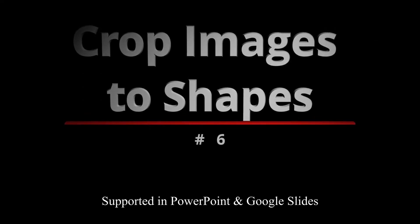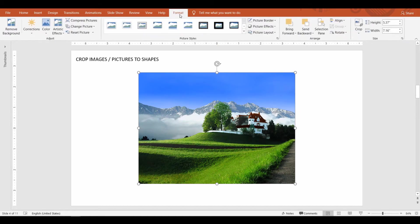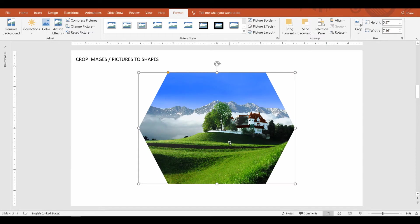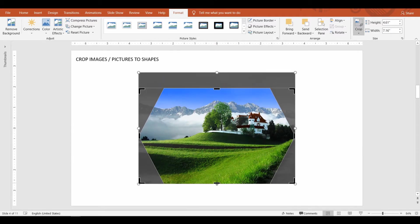Crop images to shapes. PowerPoint allows you to crop images into one of many predefined shapes. To do that, select the image. From the Crop command drop-down menu, select Crop to Shape and select a desired shape. Now you see the picture looks like the desired shape. To adjust the crop area, select the picture and click the Crop command. It allows you to maintain the shape that you selected and at the same time adjust the crop area.